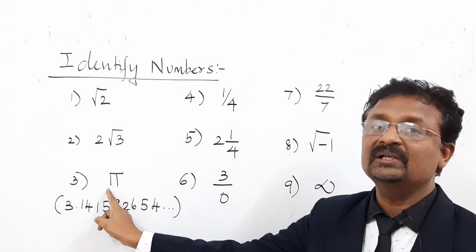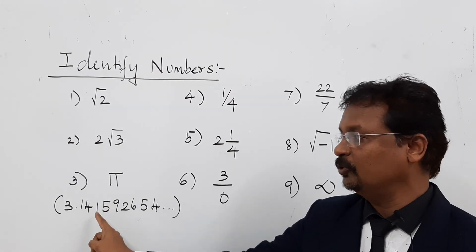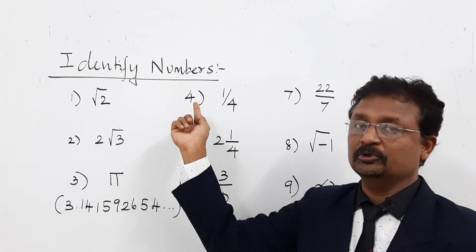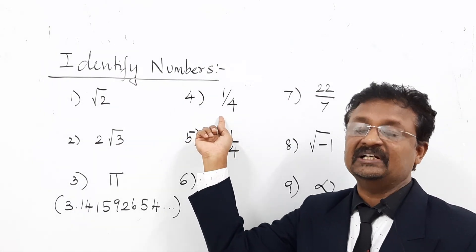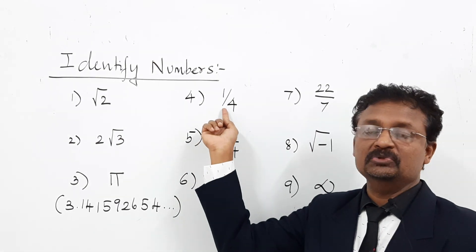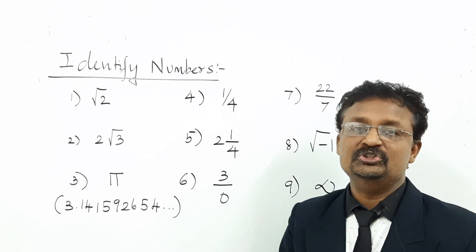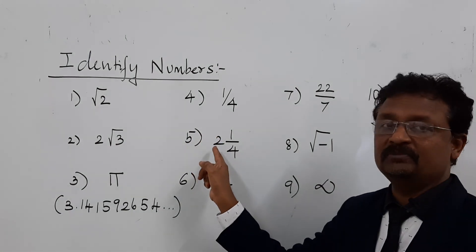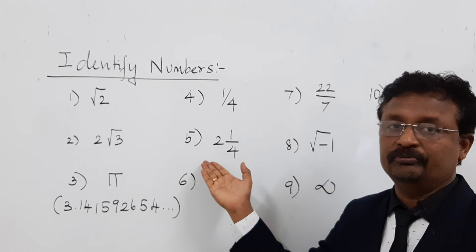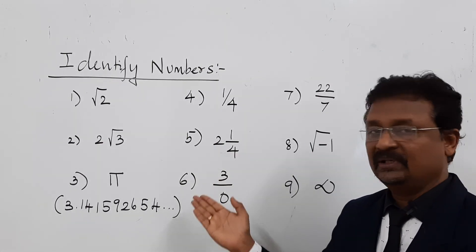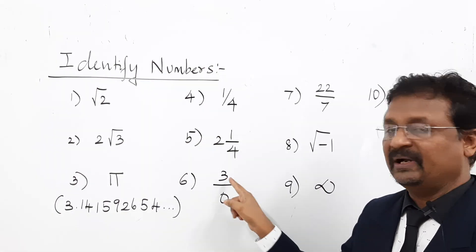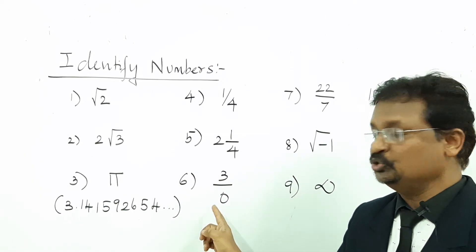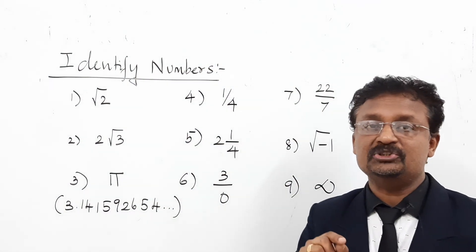Another good example is pi, the symbol which represents 3.141592654 — pi is an irrational number. Fourth example: 1 by 4 is a rational number because its decimal value is 0.25, which is terminated. Fifth example: 2 and 1 by 4, which equals 2.25, is another rational number. Sixth example: 3 by 0 — any number divided by 0 is undefined, so it is not a real number.